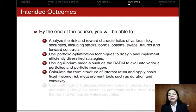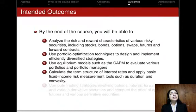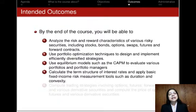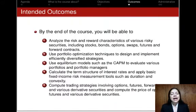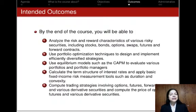Moving on to the fixed income or bond market, this course is going to teach you how to calculate the term structure of interest rates as well as apply certain basic fixed income risk measurement tools such as duration and convexity, which are key to both measuring and managing the riskiness of bond portfolios. Finally, you will be able to compute trading strategies involving derivative securities like options, futures, forwards, and other assets, as well as compute the prices of these derivative assets.